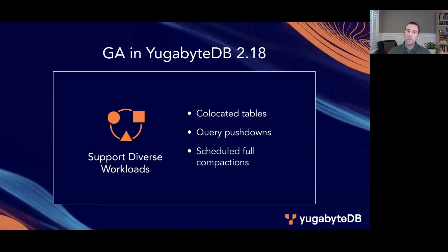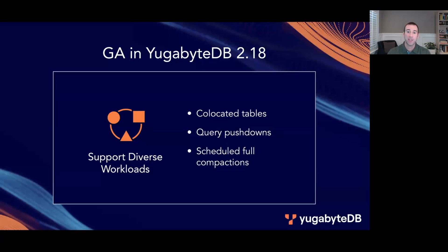We also continue to evolve YugabyteDB beyond the core capabilities of PostgreSQL. This release delivers several new query pushdowns and enhancements to further take advantage of our differentiated storage layer and to move processing as close to the data as possible. Scheduled full compactions improve the performance of data access and minimize space amplification, especially for workloads with lots of deletes, updates, or TTL workloads.